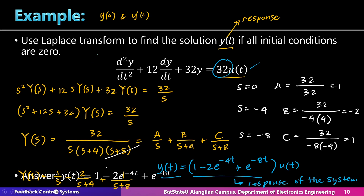The answer is confirmed: y(t) = 1 − 2e^(−4t) + e^(−8t). This is indeed the correct solution. Let us now proceed to the next example.